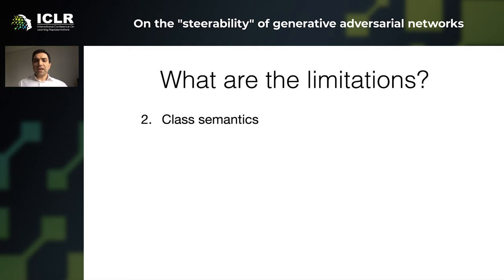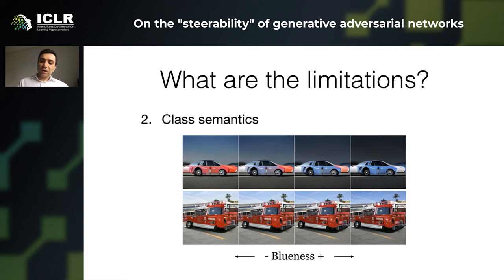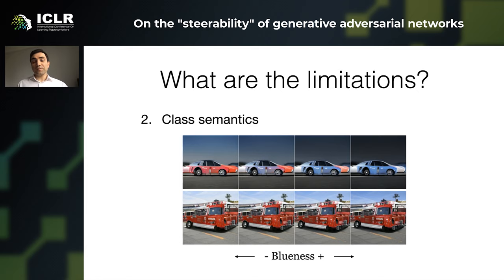Another limitation arises from class semantics. For instance, we can take this red car and turn it blue, but we cannot take a red fire truck and turn it blue. Again, this is because the GAN has never seen a blue fire truck, and the architecture may not allow for the disentanglement of this attribute in the case of BigGAN.